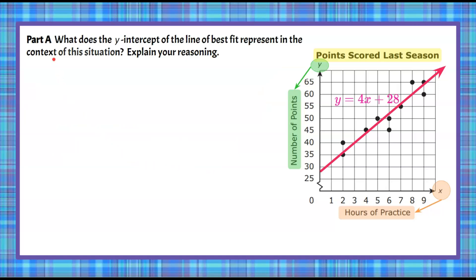Here's Part A: What does the Y-intercept of the line of best fit represent in the context of the situation? Explain your reasoning. Go ahead and pause the video, record your answer, and then come back to check your work. Welcome back. We're asked what the Y-intercept means in context — so we want to identify the point where the line of best fit crosses our Y-axis. We can see it's between 25 and 30, but not exactly clear from the graph alone.